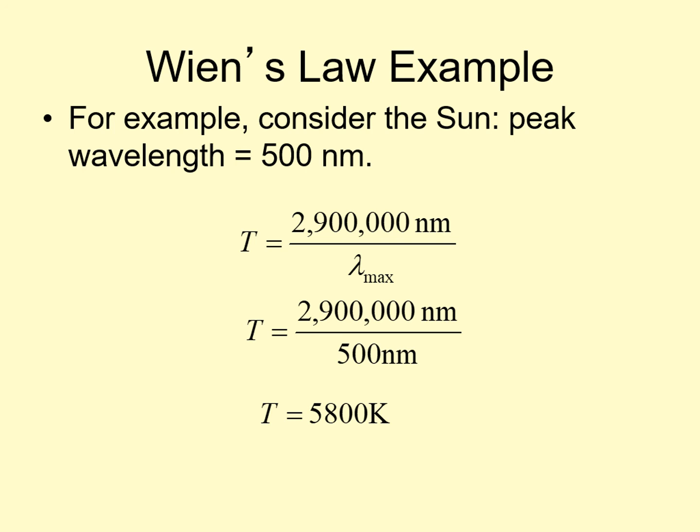So that's how we measure the temperature of an object, without actually going there. Just look at the thermal radiation it puts out, and measure the peak wavelength. When we put that into Wien's law, we can find the temperature.